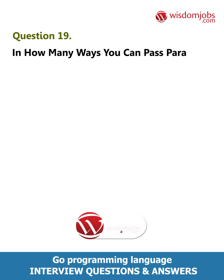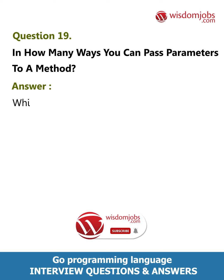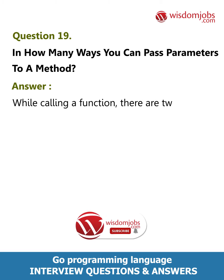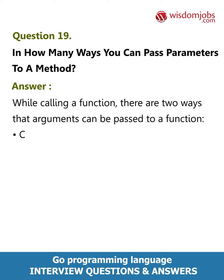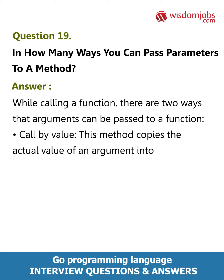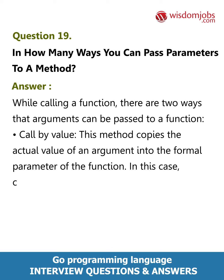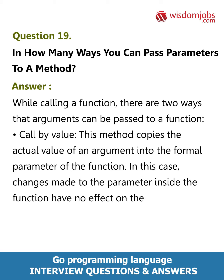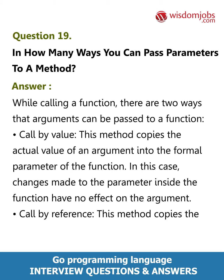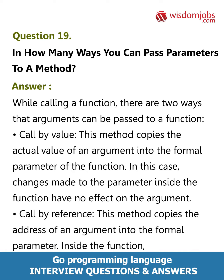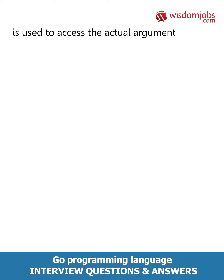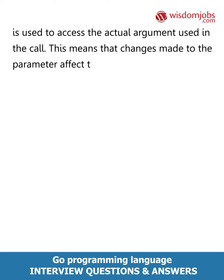Question 19: In how many ways can you pass parameters to a method? Answer: While calling a function, there are two ways arguments can be passed. Call by value: this method copies the actual value of an argument into the formal parameter of the function; changes made to the parameter inside the function have no effect on the argument. Call by reference: this method copies the address of an argument into the formal parameter; inside the function, the address is used to access the actual argument, meaning changes made to the parameter affect the argument.